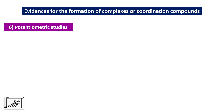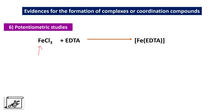The sixth evidence is potentiometric studies. For example, if FeCl3 solution is taken and EDTA is added, it will form an Fe-EDTA complex. In the case of the reactants, the Fe metal is free in solution and gives some reading on the potentiometer. But when it reacts with EDTA and forms the Fe-EDTA complex, the Fe metal is held by the EDTA ligand. Therefore, there is a change in ion concentration and hence a change in the electrode potential of the system. This change in electrode potential with EDTA concentration indicates the formation of a coordination compound. All these evidences prove the existence of coordination compounds when metal ions react with specific ligands.